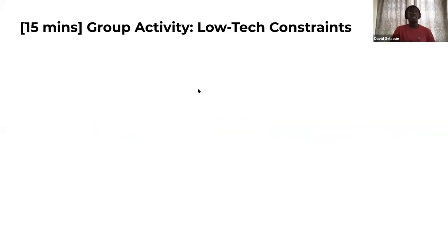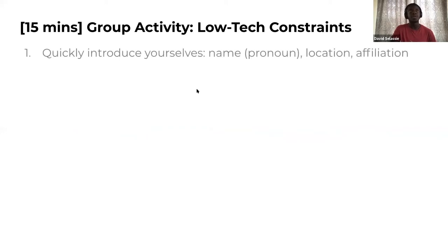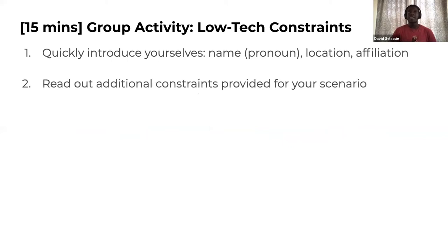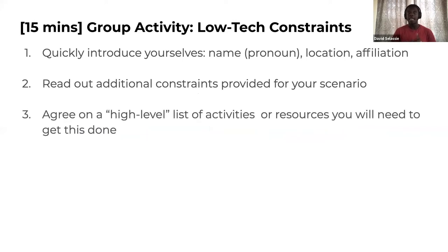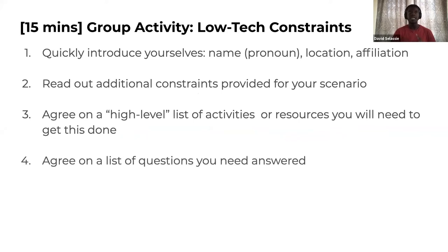For the group activity, we're going to put you into breakout groups based on the scenarios you chose, for 15 minutes. Introduce yourselves — your name, pronoun, location, and affiliation. Read out the additional constraints provided for your scenario. Agree on a high-level list of activities and resources you would need to get this done, hopefully consolidating what you did in the individual activity. And then agree on a list of questions you need answered.